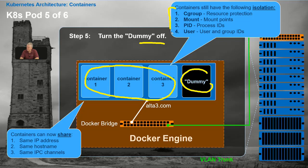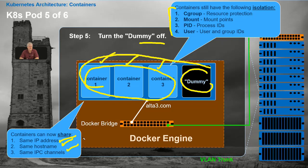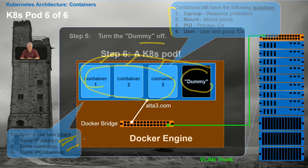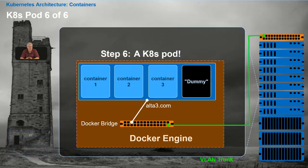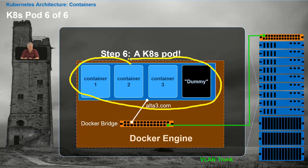We maintain four degrees of isolation: the CGroup, the mount, the process IDs, and users are completely isolated per container. But they're all on the same team when it comes to sharing the same IP address, the same hostname, and interprocess communications channels. That is the definition of a Kubernetes pod. Once a Kubernetes pod is created, it becomes the most atomic structure that Kubernetes will manage — Kubernetes won't dig in and control individual containers anymore. All of Kubernetes focuses on the pod as a whole.